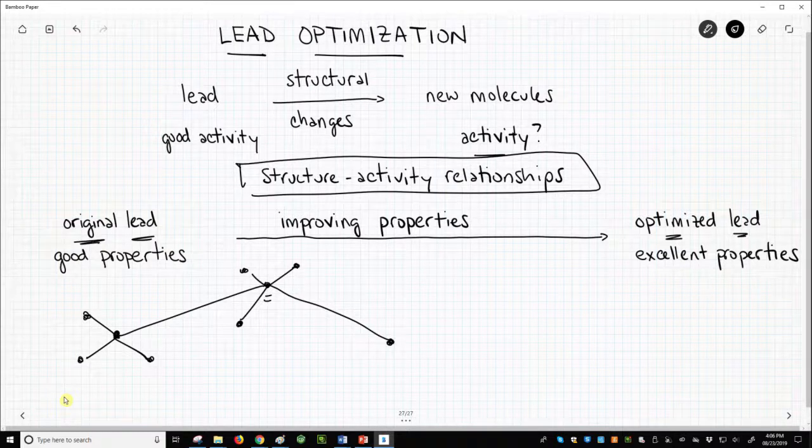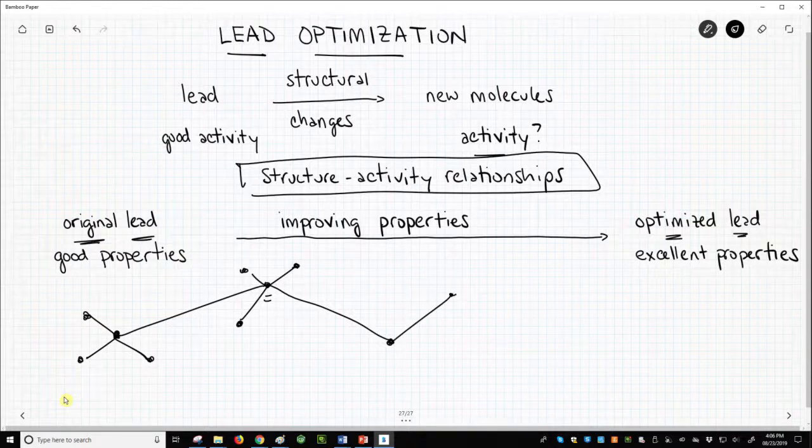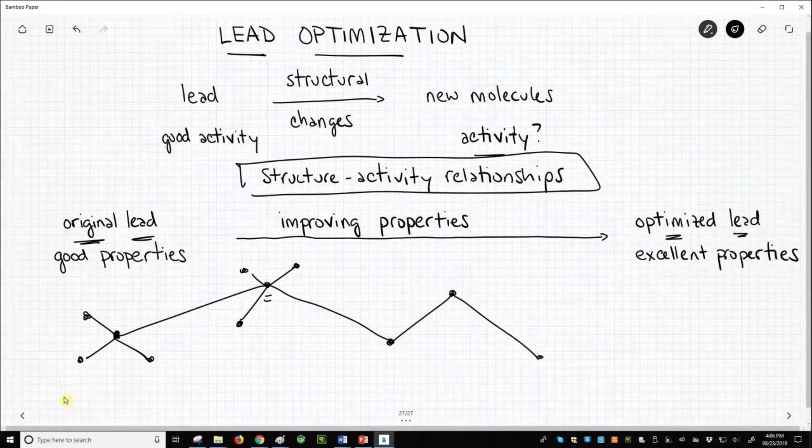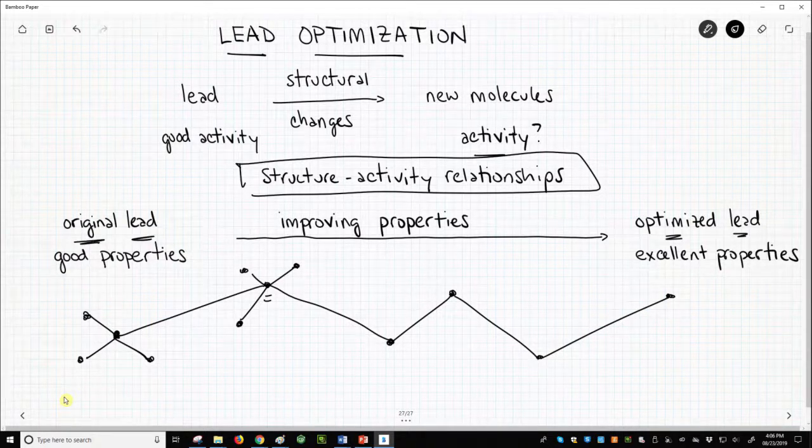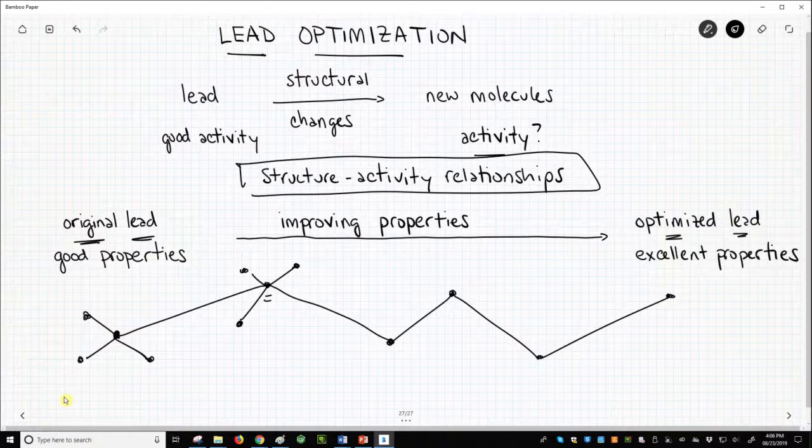The best may be good enough to be named a third generation lead. This process continues until a new lead is obtained with sufficiently optimized properties so that the lab and animal data can support a successful IND application and clinical trials can begin.